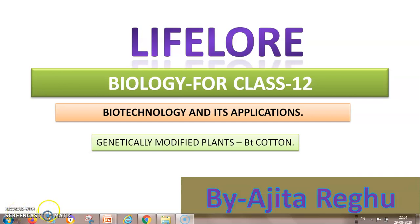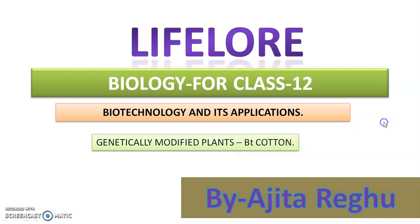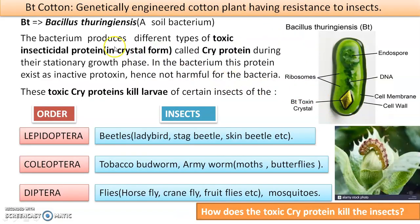Today we are going to talk about the topic of genetically modified plants, and we'll talk in detail about how BT cotton is produced. In the previous video we discussed applications of biotechnology in many other areas. In agriculture, we will go in depth. BT cotton is a genetically engineered cotton plant having resistance to insects.